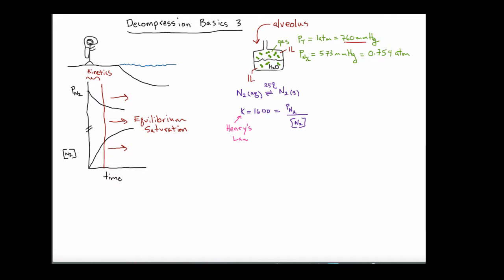In the last video I described the breakdown of partial pressures, but in Decompression Basics 3 I'm going to focus in on nitrogen, which under these circumstances will represent 573 millimeters of mercury, or 0.754 atmospheres of pressure, in the air sac in equilibrium with the tissue.